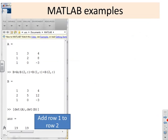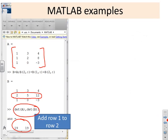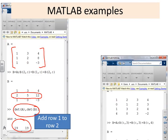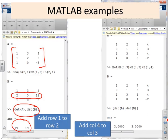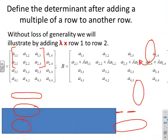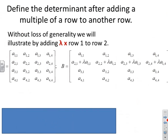Numerical examples confirm this: adding row one to row two in a matrix leaves the determinant unchanged. Similarly, adding column four to column three in a four-by-four matrix — only column three changes, all others remain the same — and when we compute the determinants of A and B, they are identical.